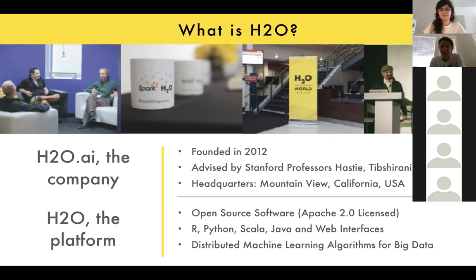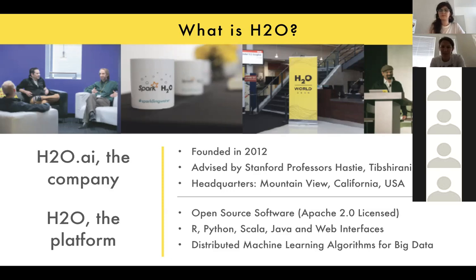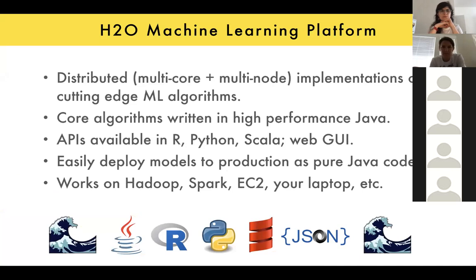We're a machine learning software company. H2O is a platform — it's written in Java, but we have an R API and a Python API, which is mostly how data scientists use it. One of the reasons it was created is because it's meant to scale to large datasets and be quite fast — it's all about performance, speed, and the ability to productionize models for enterprise use cases.